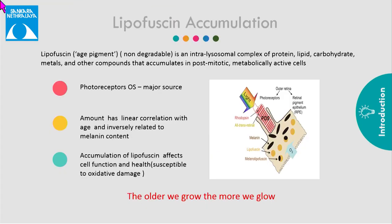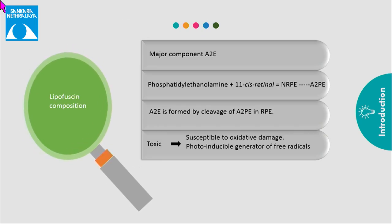Adding a note on lipofuscin: it is an intralysozomal complex of proteins, carbohydrates, and metals. The major source is the photoreceptor outer segment, and the amount is linearly related to age — it increases with age. The major component of lipofuscin is A2E, which is formed as a by-product of the visual cycle and is toxic as it makes cells susceptible to oxidative damage.